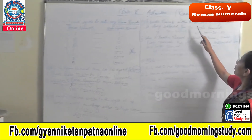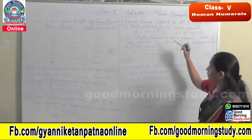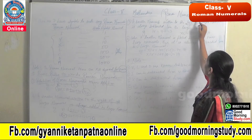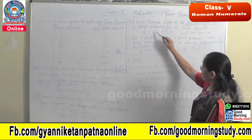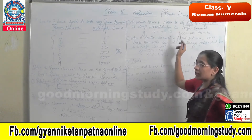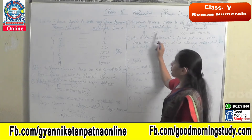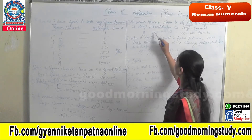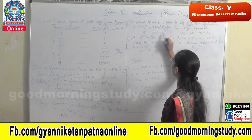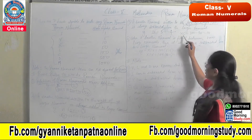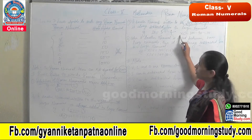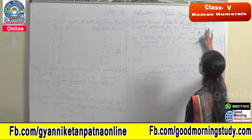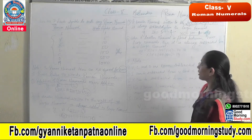The third rule is: a smaller numeral written to the left of a larger numeral is always subtracted from the larger numeral. If the smaller numeral is on the right, we add; if it is on the left, we subtract. For example, IV — I is smaller than V and written to the left. V stands for 5 and I stands for 1, so 5 minus 1 equals 4. Another example: XC — X is written to the left of C. C stands for 100 and X stands for 10, so 100 minus 10 equals 90.